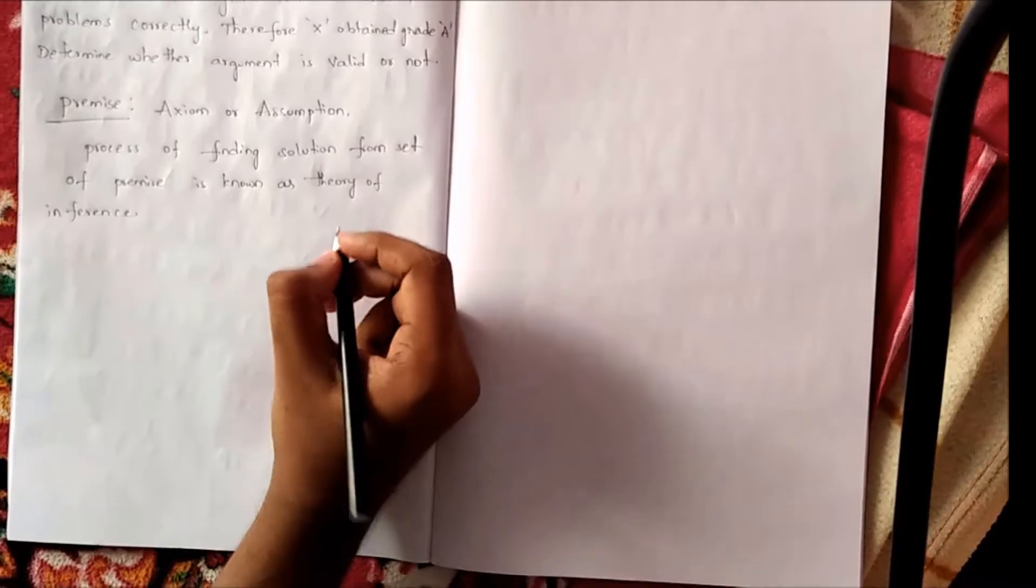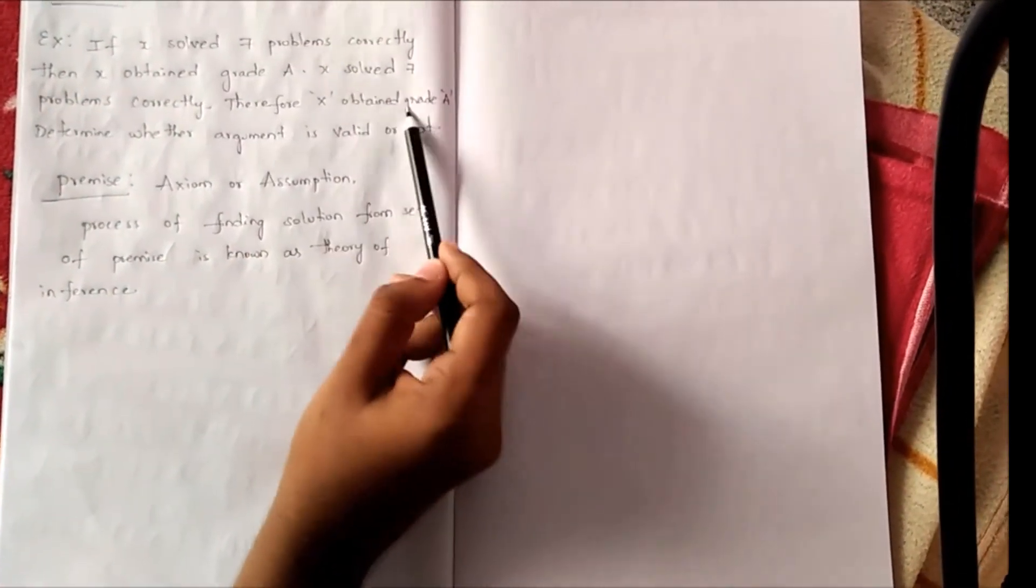Let me explain you with one example. See, if x solved 7 problems correctly, then x obtained a grade A. x solved 7 problems correctly, therefore x obtained a grade A.